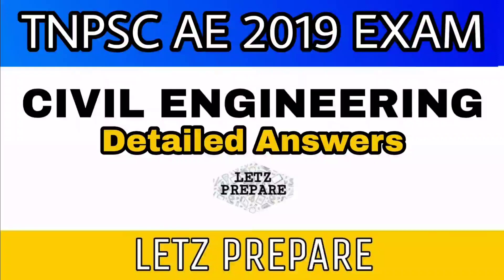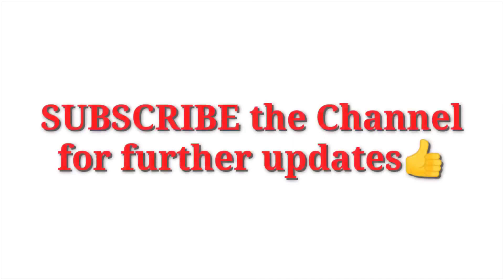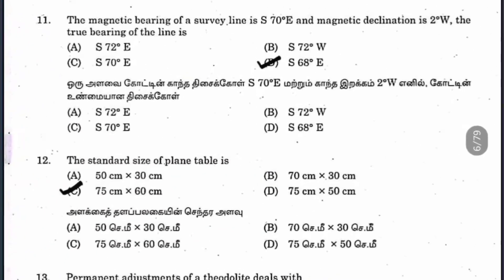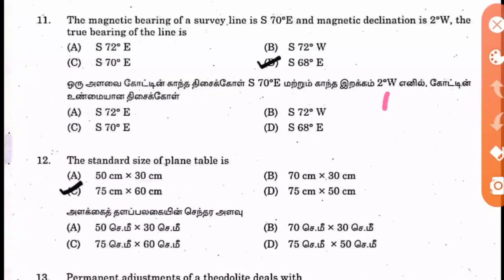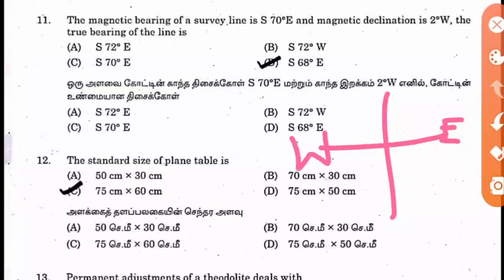Let's prepare on the TNPAC AE 2019 question paper. Question 11: the magnetic bearing of a survey line is South 70 degrees East. If this is your normal line, it is South 70 degrees towards East.